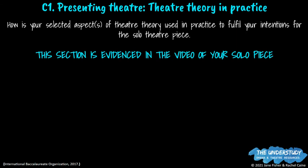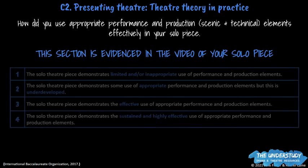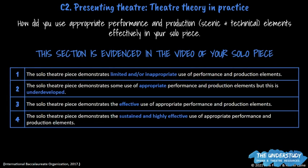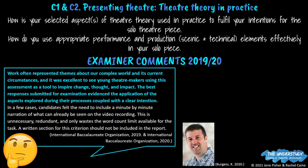Criterion C assesses how well you were able to embody the particular aspect you chose in performance — it's not necessarily assessing your performance skills. The only evidence the examiner will use is the video of your solo piece, so it's important we film clearly and not too far away. Examiner comments note that in Part D you don't need to evaluate your performance minute by minute — you can just choose sections to evaluate. There is nothing to write for Criterion C — it's just your performance.